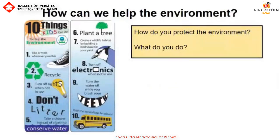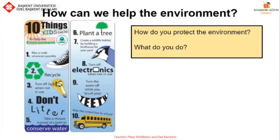So how can we help the environment? Here are 10 ways. We can bike or walk instead of taking buses or cars. We can recycle. We can turn off our lights when we don't use them. We shouldn't litter. We should take a shower instead of a bath to conserve water. We can plant a tree. We can create wildlife habitats like bird houses. We can turn off electronics when we don't use them, turn off the water when we brush our teeth, and take public transport instead of driving to school. How do you protect the environment? What can you do better?